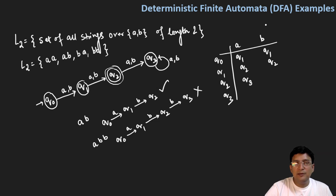And in q2 if you get symbol a or b you move to q3 state, and you remain at q3 if you get any symbol in the q3 state. So this way you have seen that you have actually shown all the transitions.